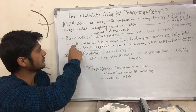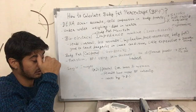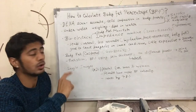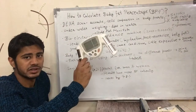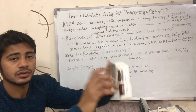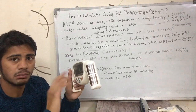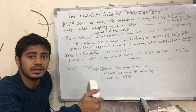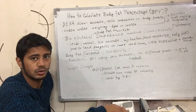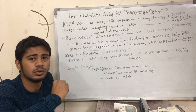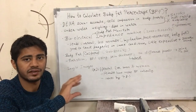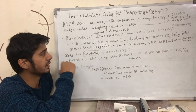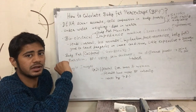Another method is the bioelectrical impedance machine, also called a body fat monitor, which you can search for online if you want to buy one. You enter your age, height, and body weight, then hold it in your hands and press the start button. It passes a mild current through your body — you will not feel it — and after seven to ten seconds it gives you an estimation of your body fat percentage.